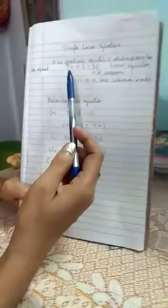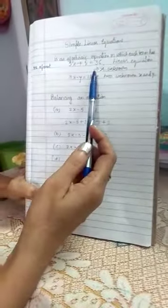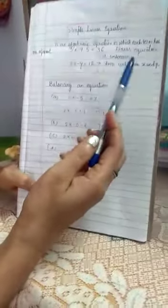Now what is simple linear equation? Simple linear equation is an algebraic expression in which each term has exponent one. Now let's take a look. There is an expression 3x plus 5 equals 36. This is a linear equation.